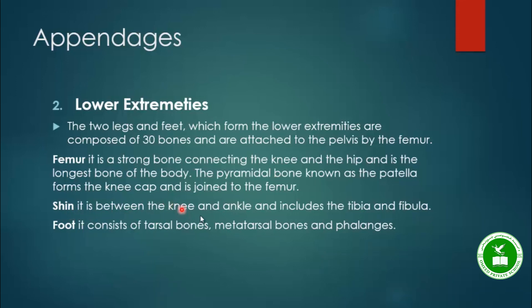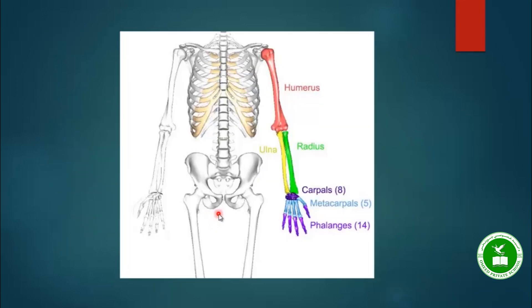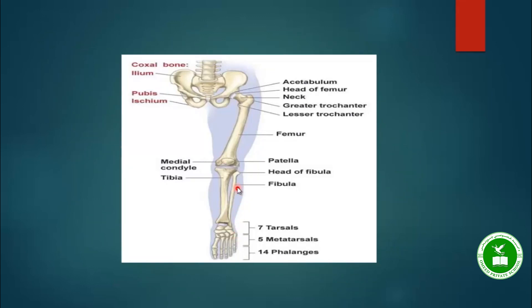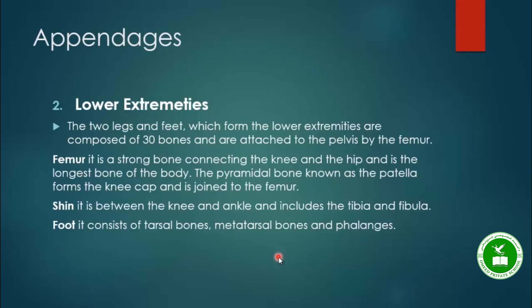Between the knee and ankle are two bones: the tibia, also called the shin bone, and the fibula. The foot bones include the tarsals and metatarsals — 5 metatarsals — as well as the phalanges, which are the toe bones.